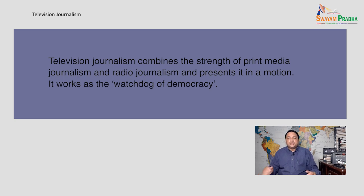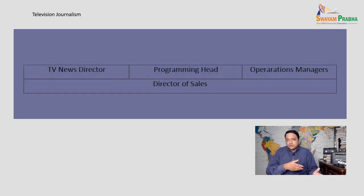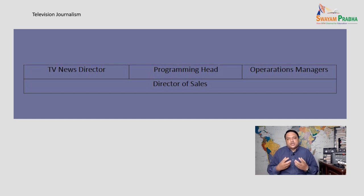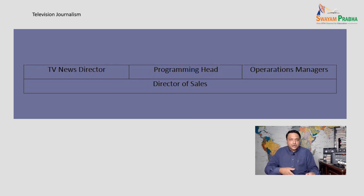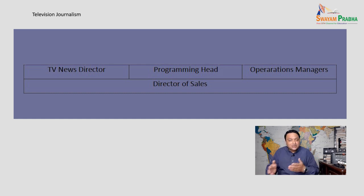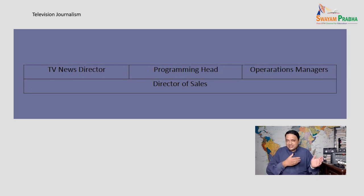The television news director manages the television station's news department and staff to ensure accurate, timely delivery of news. He or she oversees the daily operations of the television newsroom and website content, reviews stories to make sure they are fair and accurate before they go on air, and ensures adherence to journalistic and legal standards. Solving problems when stories selected for broadcast aren't coming together, and monitoring news developments and sending news feature ideas to personnel for content creation, are also part of this role.